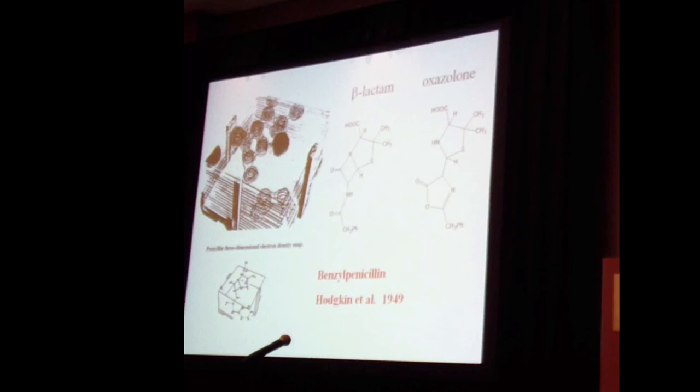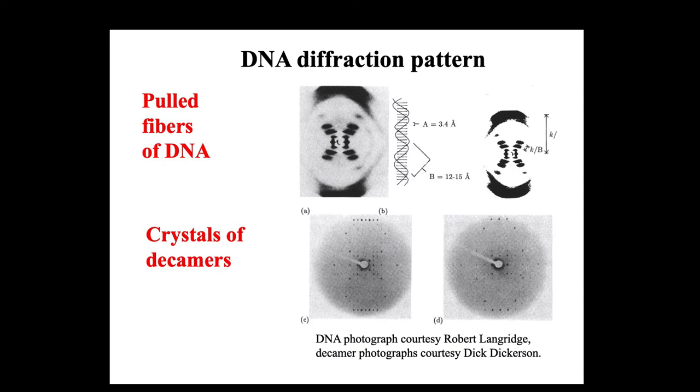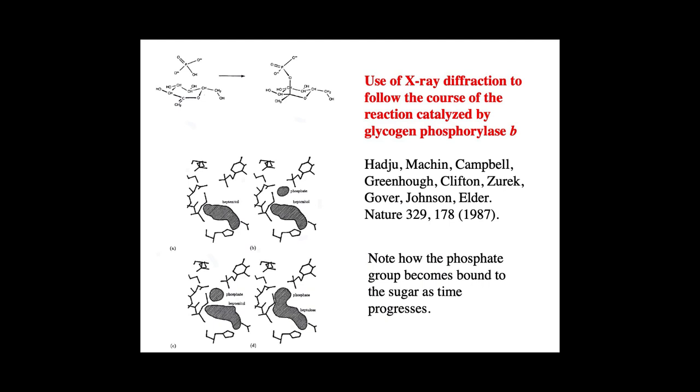So just to remind you quickly, because I'm out of time, I think, of a few structures. Penicillin is shown to have a four-membered ring. Three-dimensional DNA, you all know about. And pooled fibers and the crystals of the dodecamer still have the same diffraction pattern, so it's very useful for teaching about diffraction, intermolecular interactions. And the use of X-ray diffraction to follow the course of quite complicated reactions.